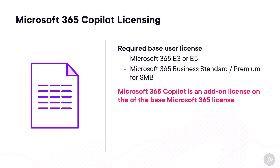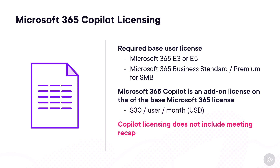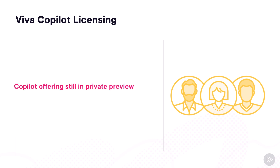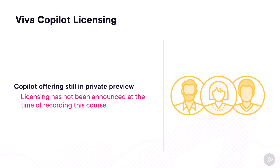On top of the base license, Microsoft 365 Copilot will be an add-on license costing $30 per user per month in US dollars. Importantly, the Microsoft 365 Copilot license does not include the Teams Meeting Recap functionality — that is part of the Teams Premium license, which is a separate add-on. For Viva Copilot, as the offering is still in private preview, licensing has not yet been announced at the time of recording this course.